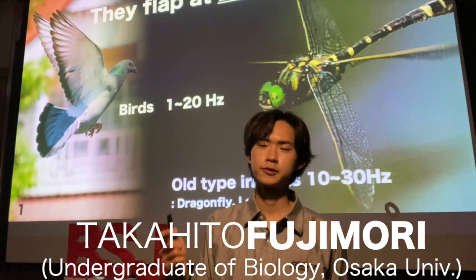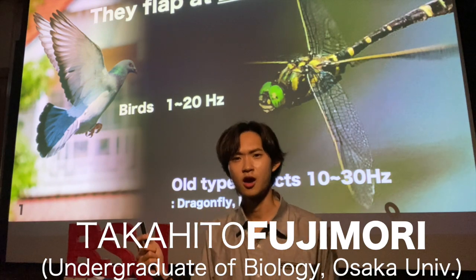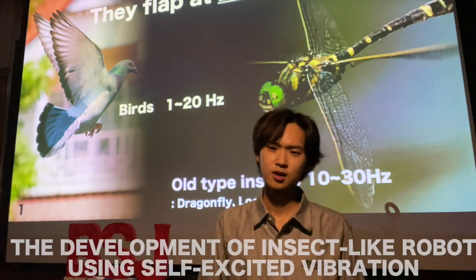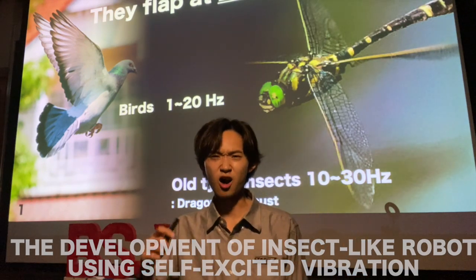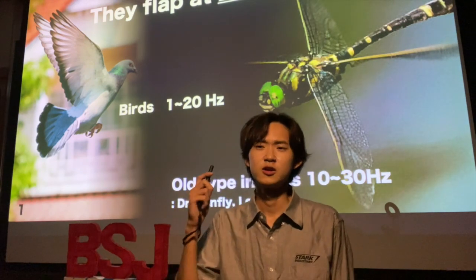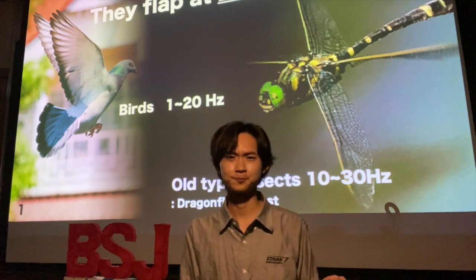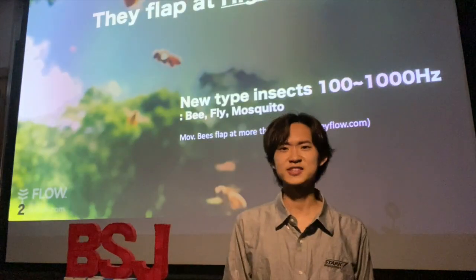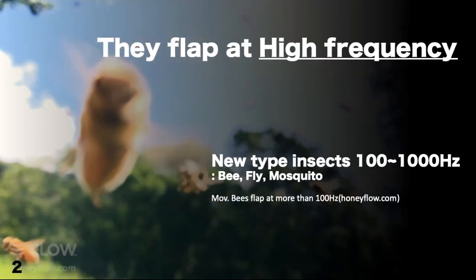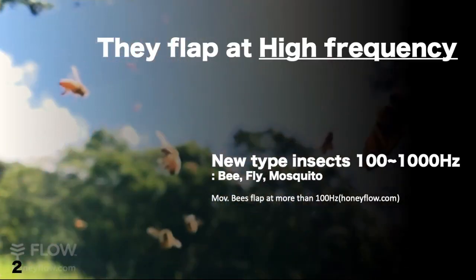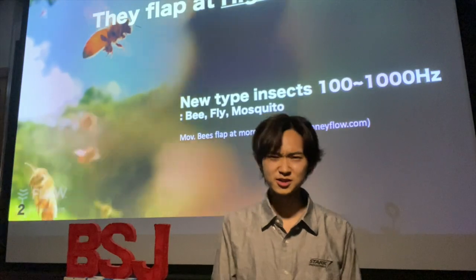On Earth there are two dominant flyers: birds and insects. Although birds flap their wings at 1 to 20 hertz, and old-type insects like dragonflies and locusts flap at 10 to 30 hertz, new-type insects like bees, flies, and mosquitoes flap their wings at more than 100 to even 1000 hertz. What makes the difference?